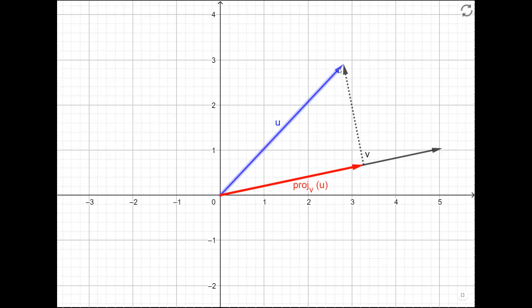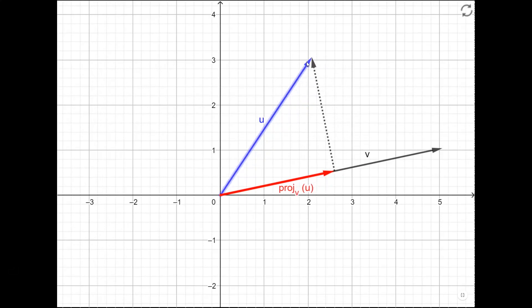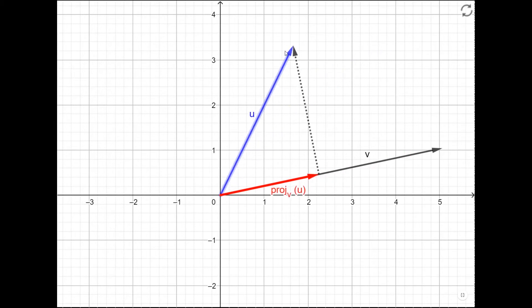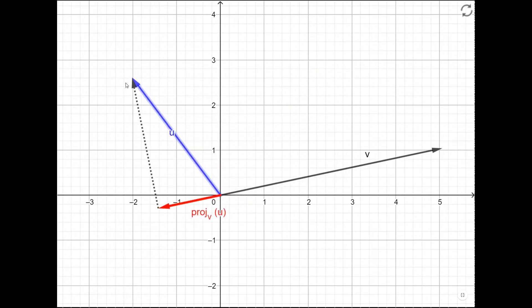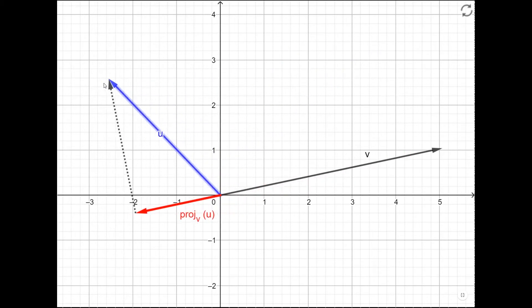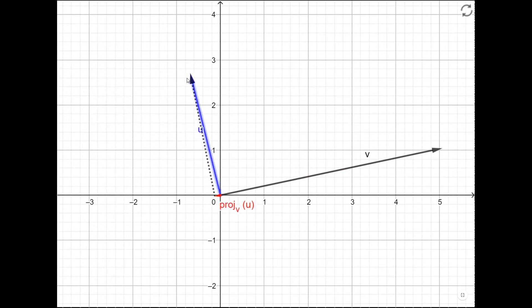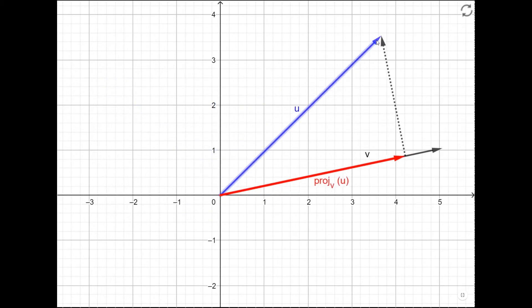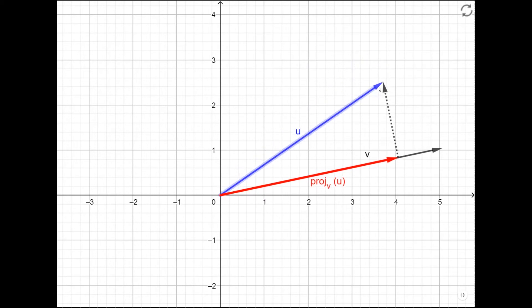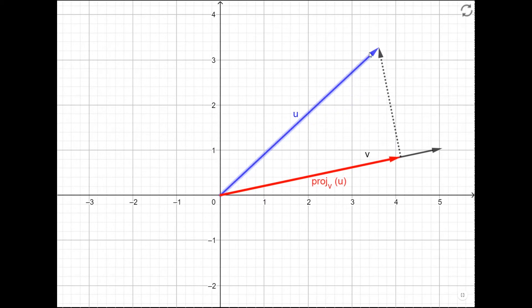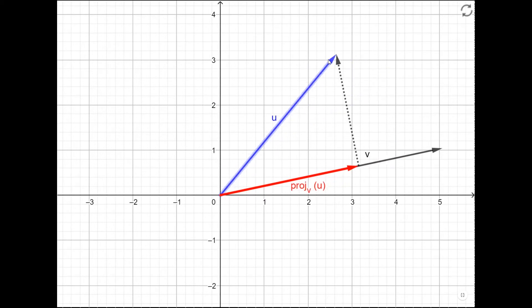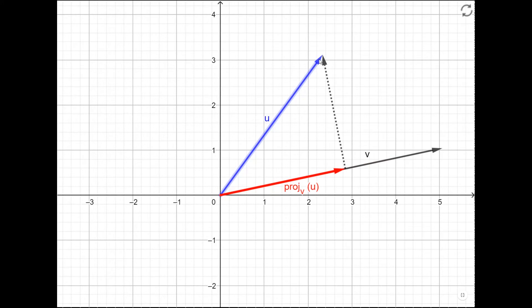Let's check it out in GeoGebra. Notice that the projection always looks like a shadow of this vector u on v. When the angles get bigger, it starts pointing the opposite direction. But you can see the construction always applies — we take a line down at right angles to v, and then this red vector that comes out is the projection onto v of u.